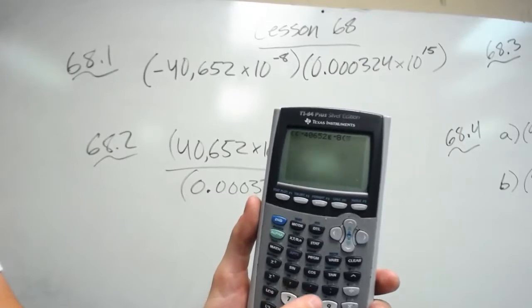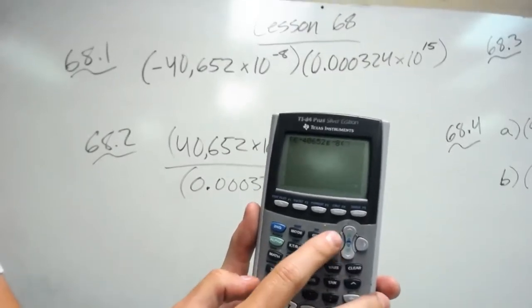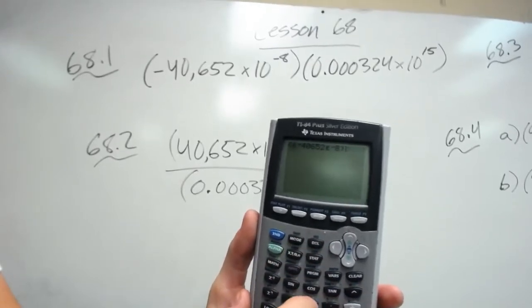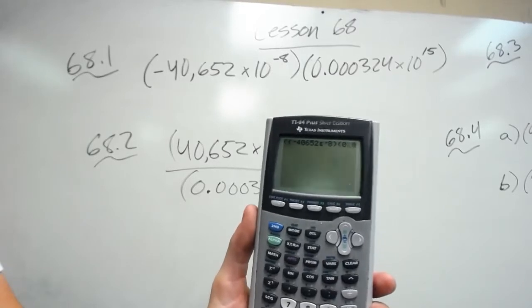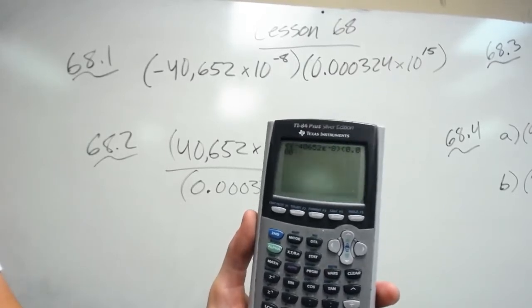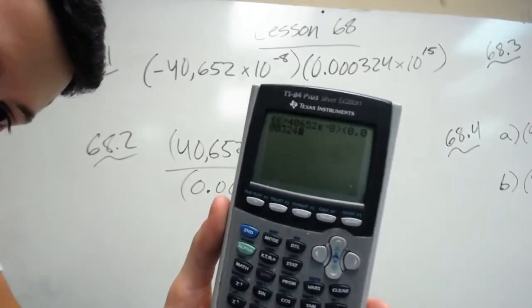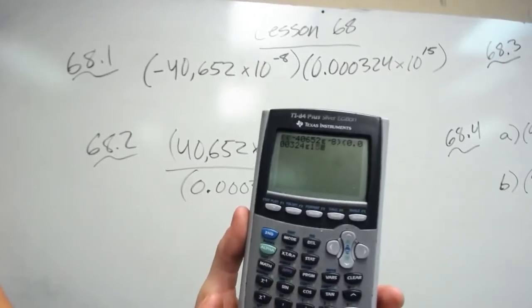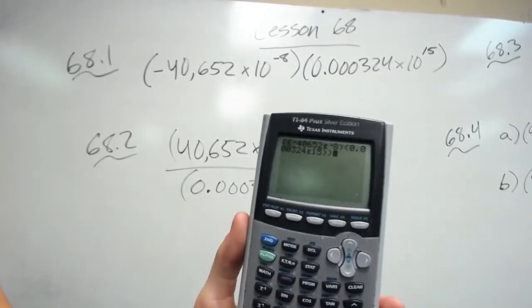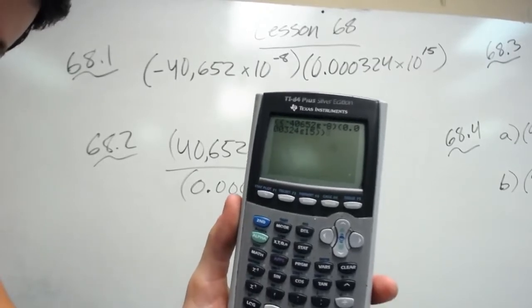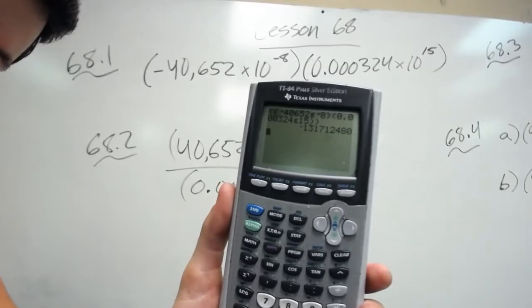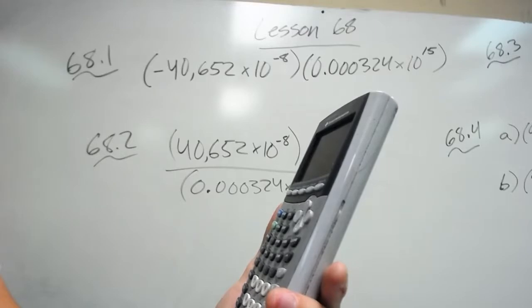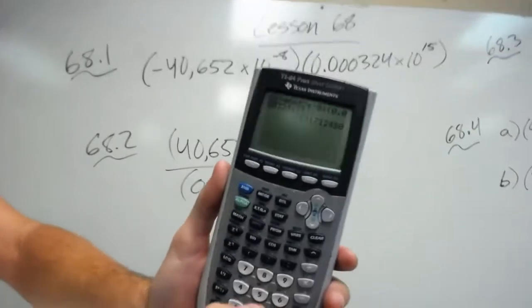Then close parenthesis. Oh dang it. Did I do the wrong way? Yep. It's hard to see on this thing. Where's the delete button? Okay. Close parenthesis. Open the other parenthesis and do 0.000324. I'm really hoping I don't make any errors. It's hard to see. EE. And it's to the 15th power. So we type that in. Do my double parentheses at the end to finish the parenthesis and then put it in a bracket. I push enter. And it gives me all that jazz. Negative 1 something and all that.